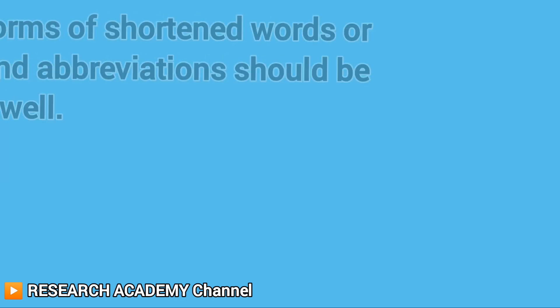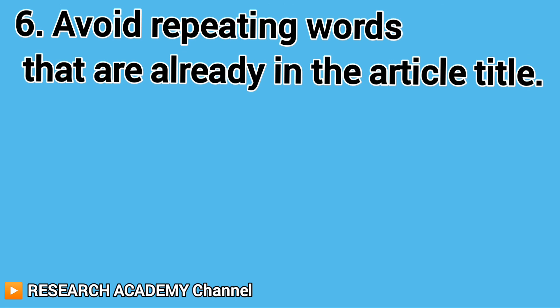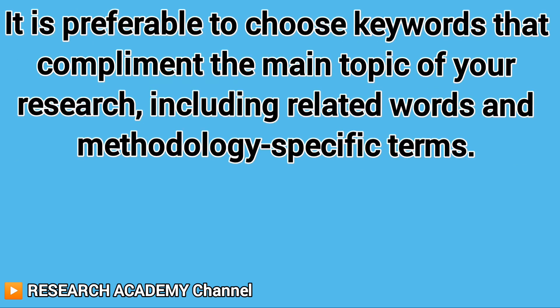Tip 5: The full forms of shortened words, acronyms, and abbreviations should be included as well. Tip 6: Avoid repeating words that are already in the article title. That's recommended by most journals, because your title is already searchable. So it is preferable to choose keywords that complement the main topic of your research, including related words and methodology-specific terms.